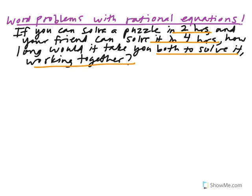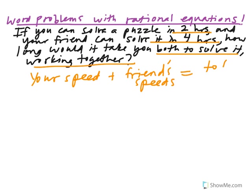Alright, so here's the key idea that you have to understand first. So your speed of solving the puzzle adds up with your friend's speed. And both of these speeds combine to make the total speed at which you guys can solve the puzzle.